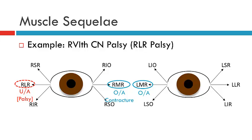The final component of the muscle sequelae is that we will note a secondary inhibition, or underaction, of the left lateral rectus. This is governed by Hering's Law. The reason we see an underaction of the left lateral rectus is because the yoke muscle, the right medial rectus, now requires less innervation to adduct as it has contracted.